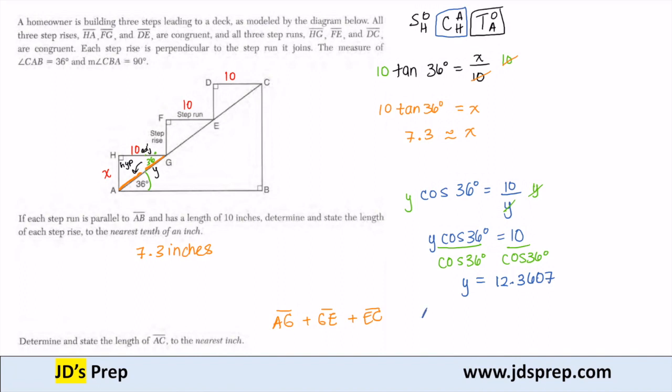So if I want to know AC, that's going to be 3 times that 12.3607, which is about 37 inches total.